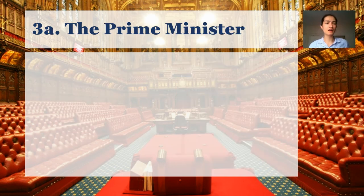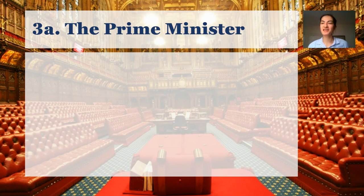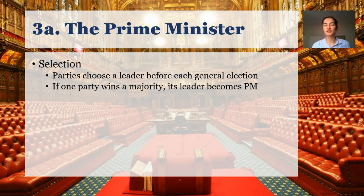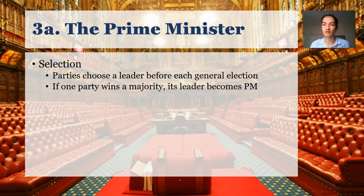The prime minister — the head of government in the United Kingdom — is probably the single most powerful person. The prime minister's office is occasionally referred to as 10 Downing Street. The prime minister is selected generally with the confidence of parliament. The way it usually works: before every general election, the parties will choose a leader. Members of parliament get to vote, and increasingly ordinary rank-and-file members of the parties also get to vote. Going into the 2019 election, Boris Johnson had just become the leader of the Conservative Party.